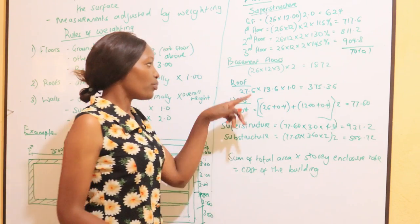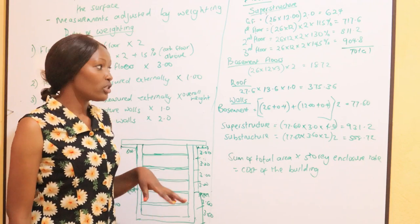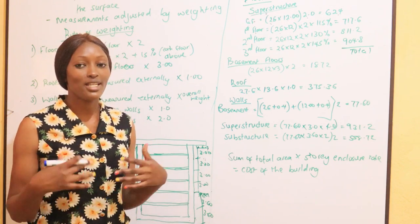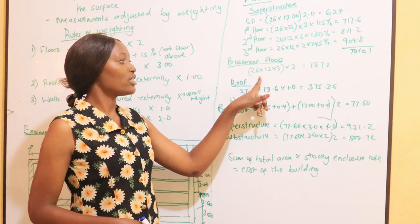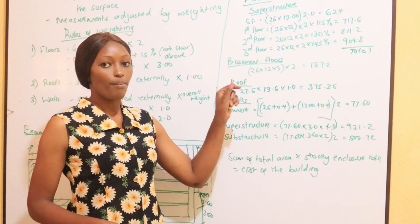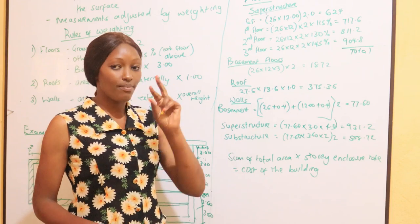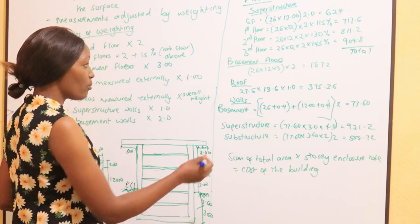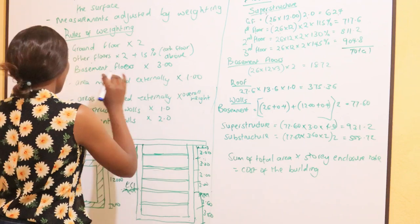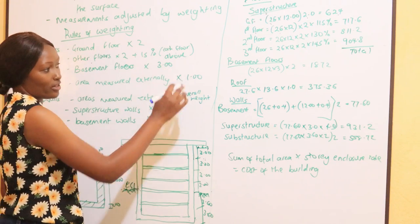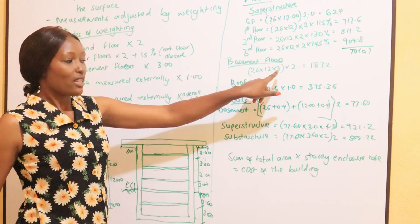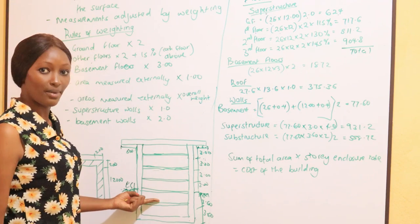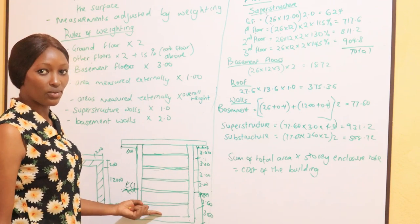Then we go to basement floors. For basement floors, the floors are measured internally — 26 by 12. We multiply by a factor of 3 for basement floors, then multiply by 2, the number of basements. We have two basements in this building.